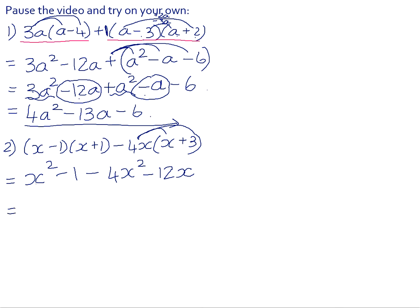x squared minus 4x squared is negative 3x squared minus the 12x minus the 1. If you wrote it as minus 1 minus 12x, that's also correct. I just like to write my powers in descending powers of x.